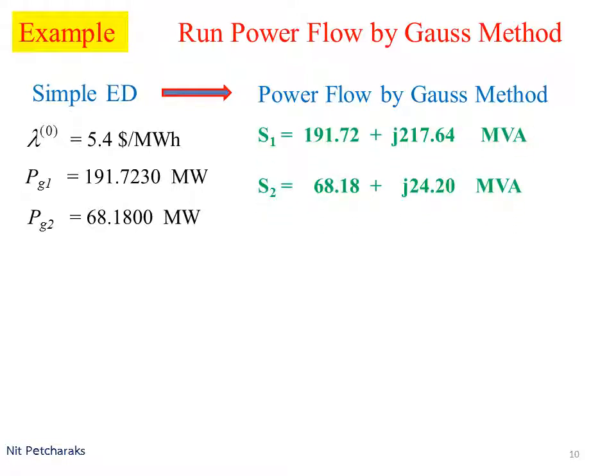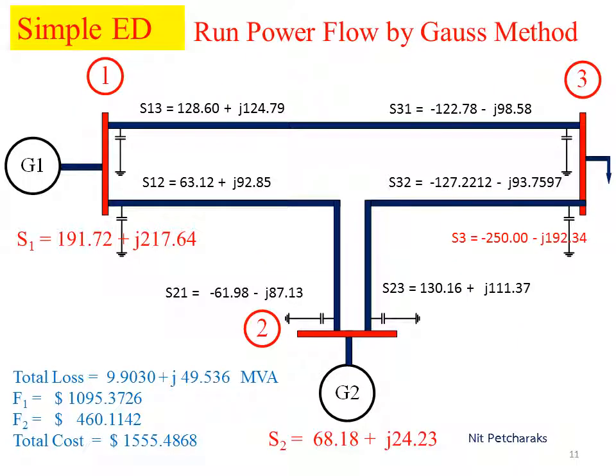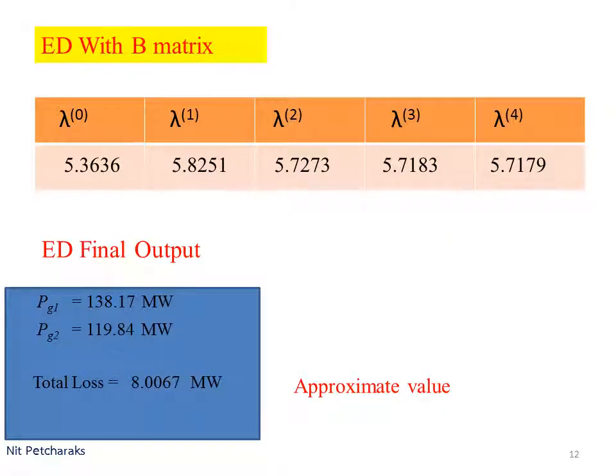Then we run power flow using Gauss method to obtain the apparent power S1, S2, and voltage at each bus. This picture shows power flowing in each line as the solution of economic dispatch without loss consideration.